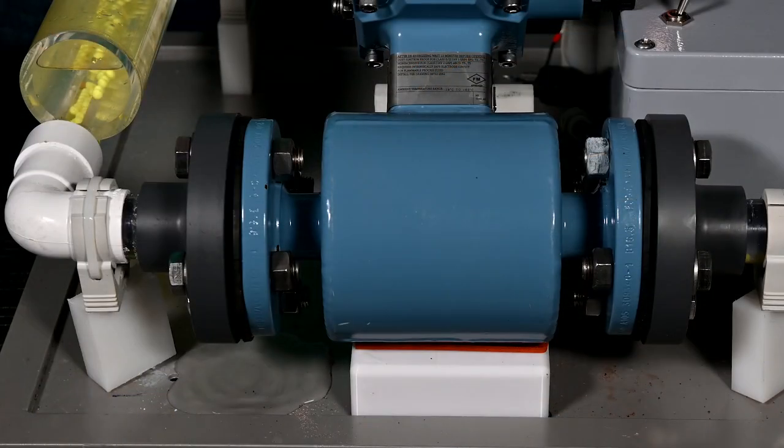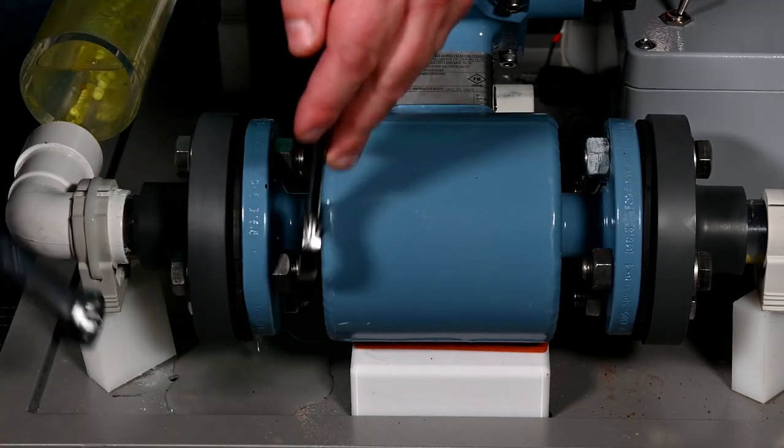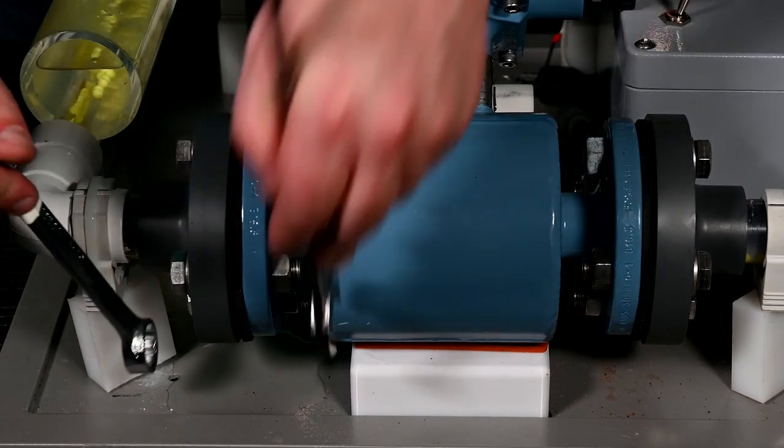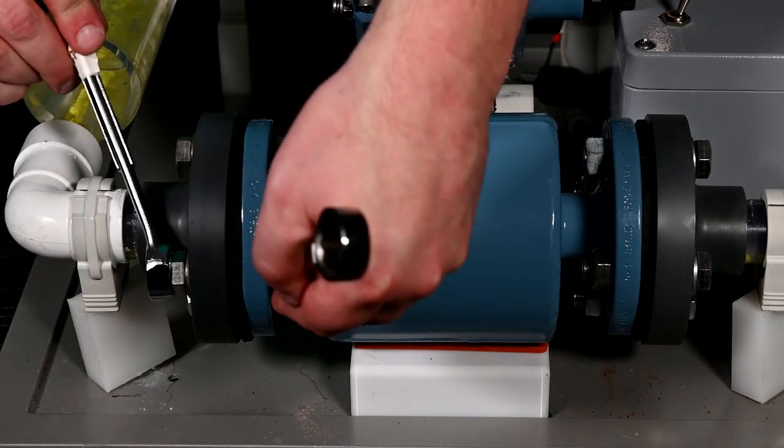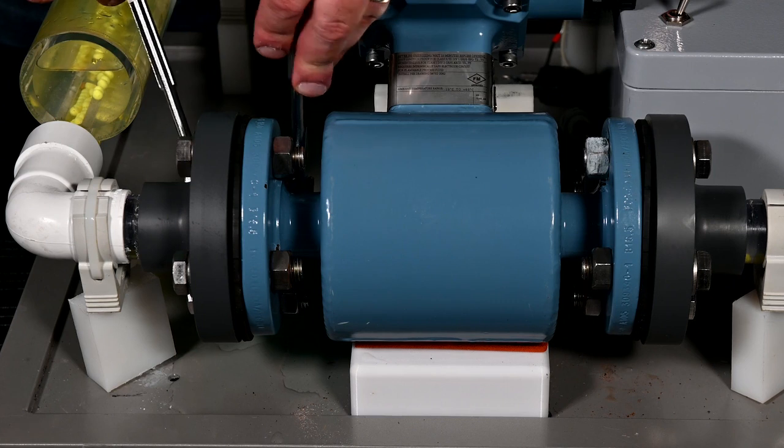Check the system for leaks. All meters are factory tested to 1.5 times the maximum flange pressure rating. If a leak is found, continue to tighten the bolts in 10% increments. Do not exceed the maximum torque value of the bolts.